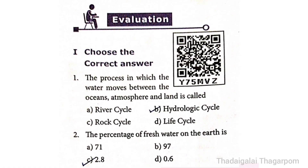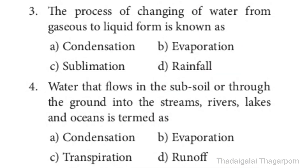2nd one: The percentage of fresh water on the earth is — 71, 97, 2.8, or 0.6. The correct answer is C option: 2.8. The percentage of fresh water on the earth is 2.8%.